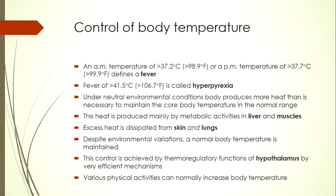Under neutral environmental conditions, the body produces more heat than is necessary to maintain core body temperature. Heat is produced mainly by metabolic activities in the liver and muscles. Liver heat production is relatively steady throughout the day, while muscle heat production is highly dependent upon physical activity. Because muscle mass makes up to 40% of total body mass, physical activity is an important contributor to heat production, especially during exercise.